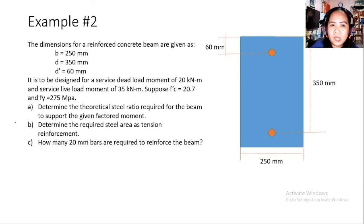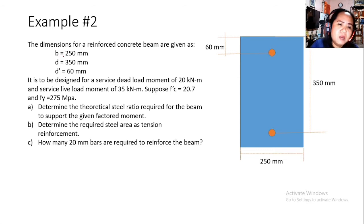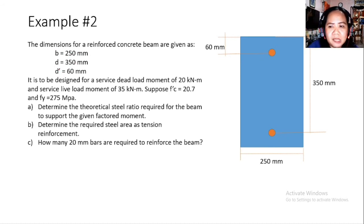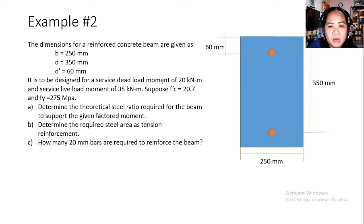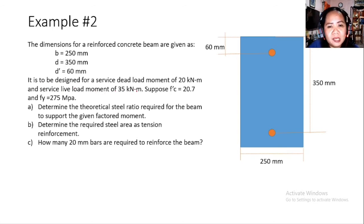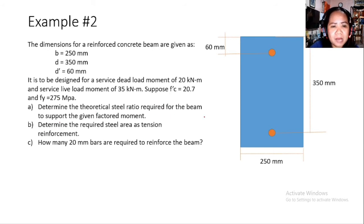Sample Problem 2 (Design): Given — B = 250 mm, H = 350 mm, D' = 60 mm. Service dead load moment = 20 kN·m, service live load moment = 35 kN·m. f'c = 20.7 MPa, Fy = 275 MPa. Required: (1) theoretical steel ratio, (2) required steel area As, and (3) number of 20mm diameter bars needed.